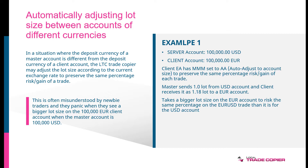When I was making this example, it was roughly around 1.18 — one euro was $1.18. So the client EA takes a bigger lot size on the euro account to risk the same percentage on the euro-dollar trade than it is for the USD account.